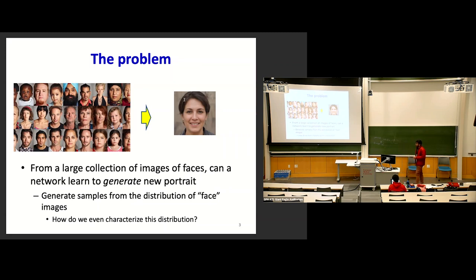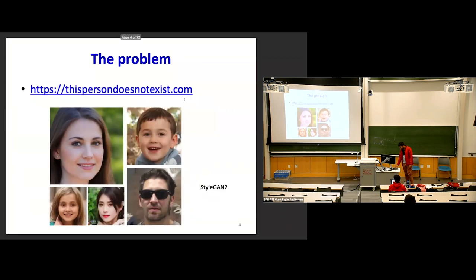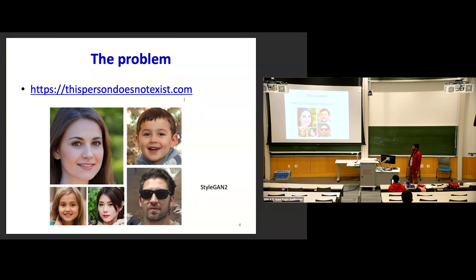In this example, we have a dataset consisting of human faces, and our aim is to generate a new face very similar to the ones actually present in the dataset. A cool thing about GANs is that the images on the slides are very similar to real-world images but these people do not exist. You can go to thispersondoesnotexist.com and every time you reload, you get a new face that doesn't actually exist.